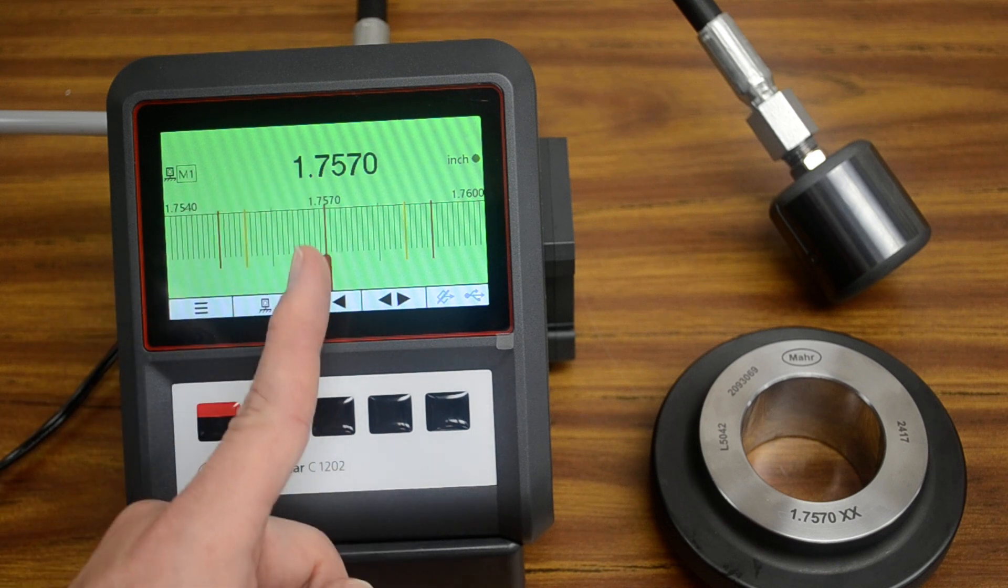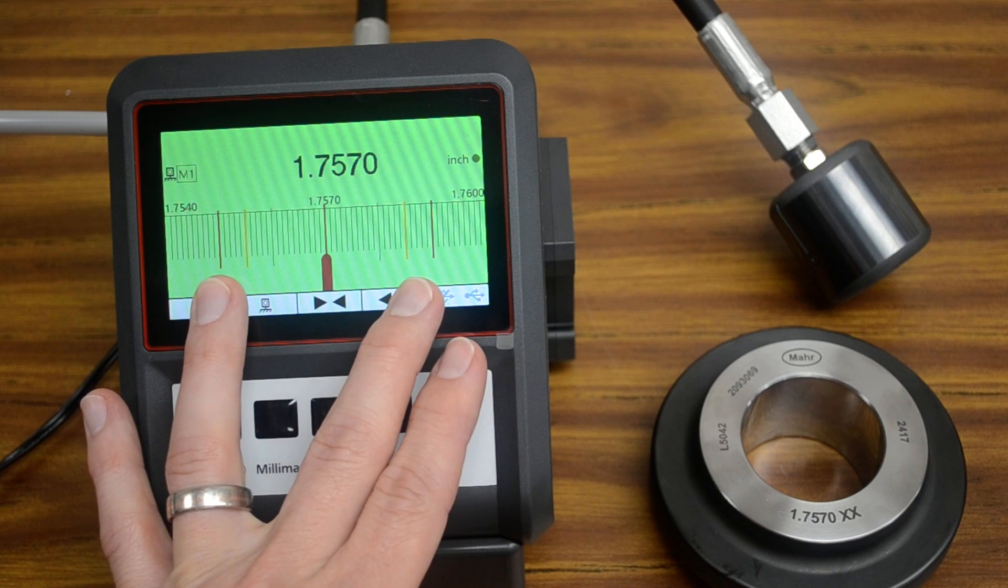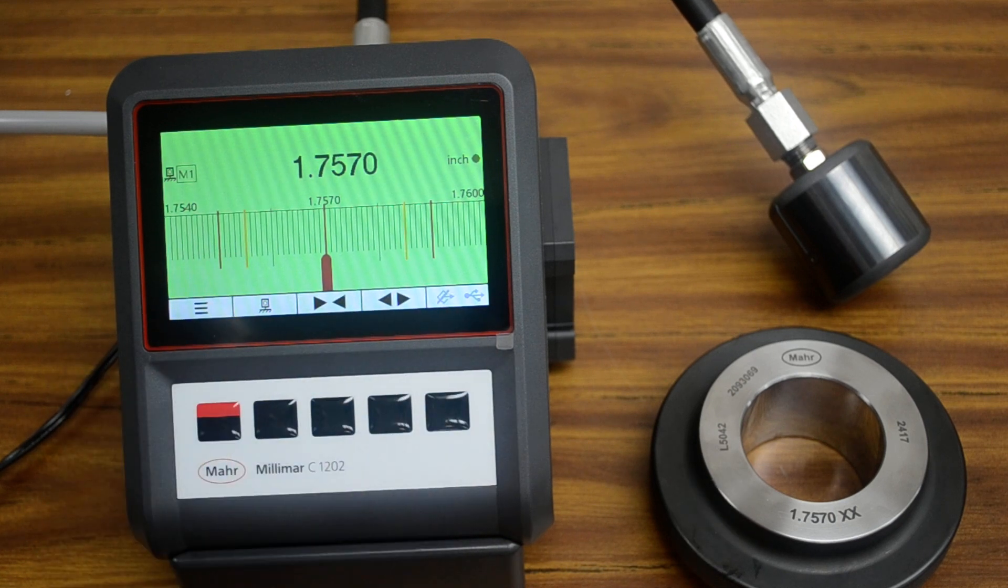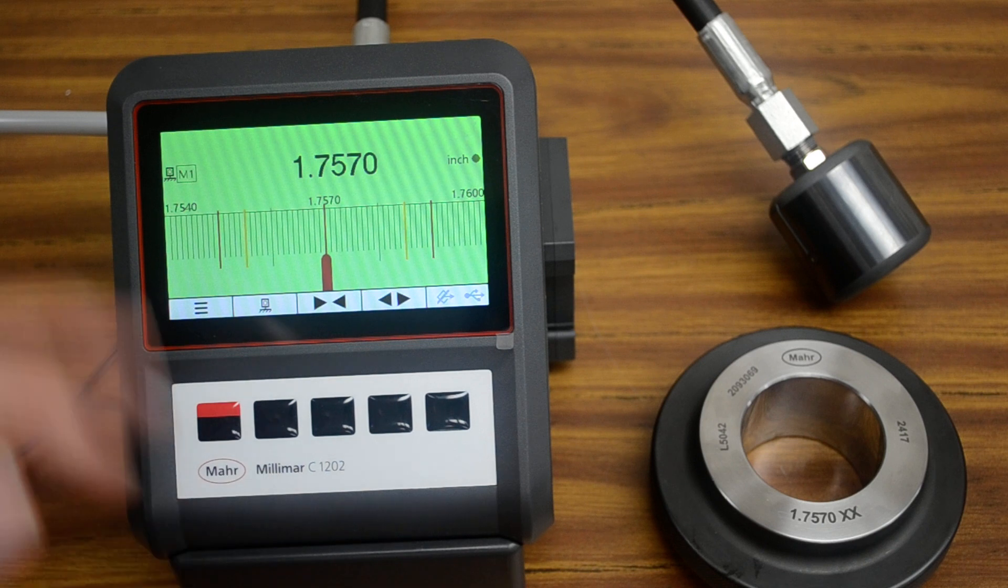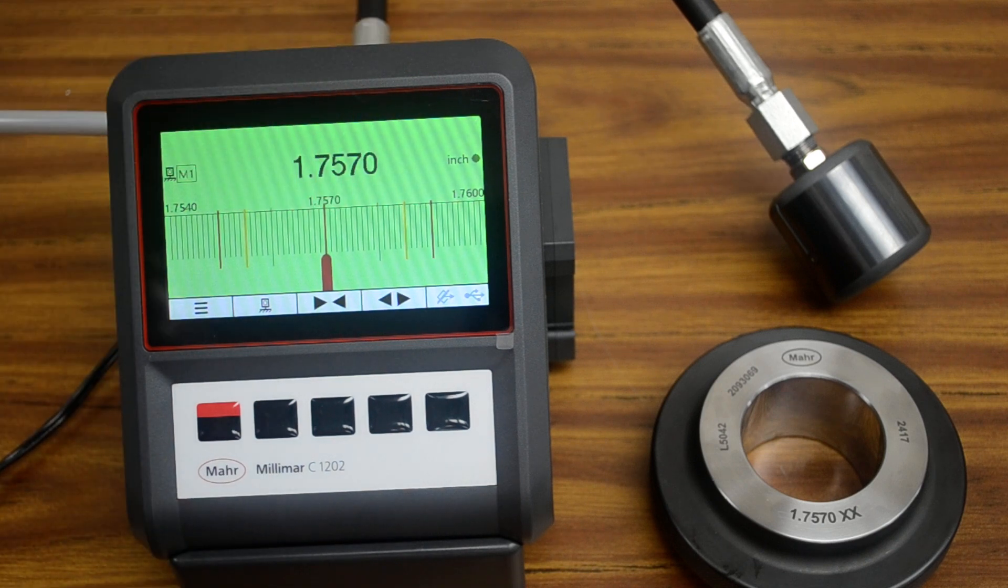So 1-inch 757 is my nominal. Here are my warning limits in yellow, and my tolerance lower and upper in red. And as we start to measure, the bar in the middle will be moving from side to side depending on the reading that it's calculating.